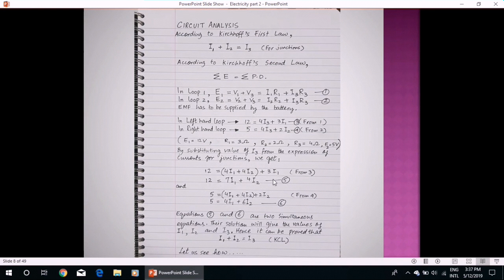Now, these two equations which contain variables I1 and I2, they are two simultaneous equations and we know that their solution will give the values of I1, I2 and then I3. So, it can be proved that I1 plus I2 is equal to I3. Let's see how.